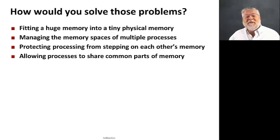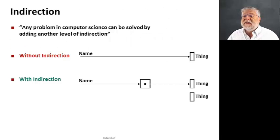So, how would you go about solving these problems? It turns out there's one important technique that comes up over and over again in computer science that can help us with all of these. And that technique is called indirection. The quote you see at the top of this slide, any problem in computer science can be solved by adding another level of indirection, is a common thing you'll hear people say, sometimes jokingly, but really seriously.